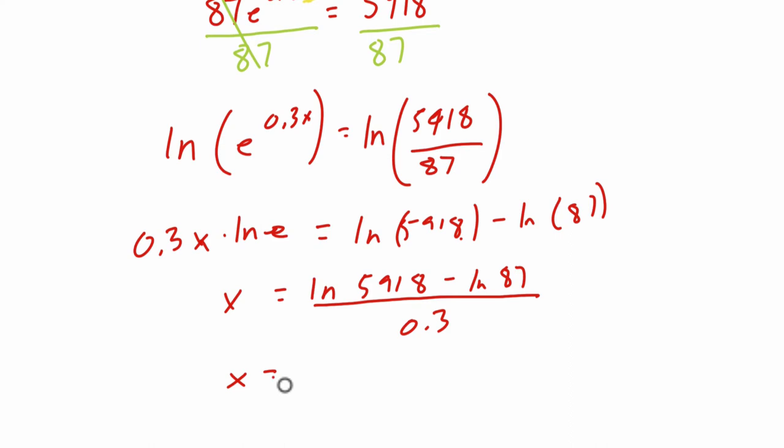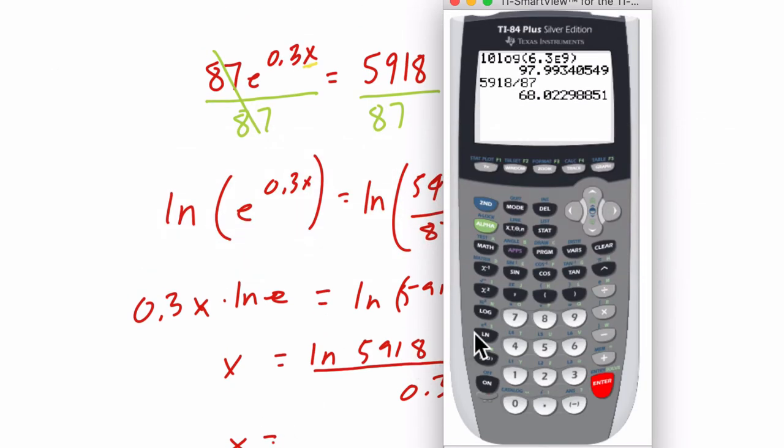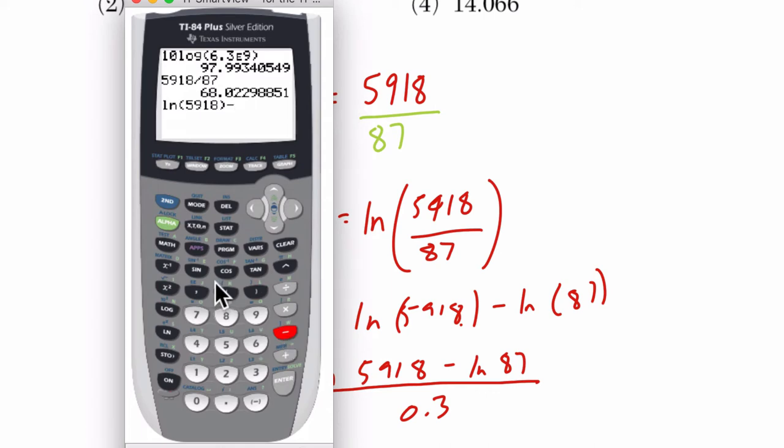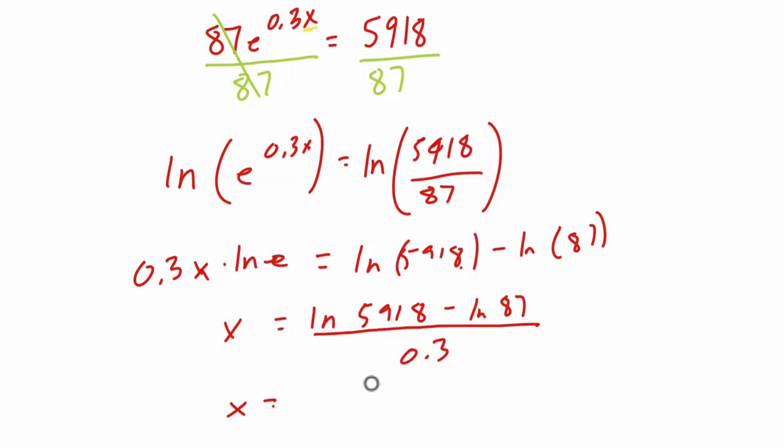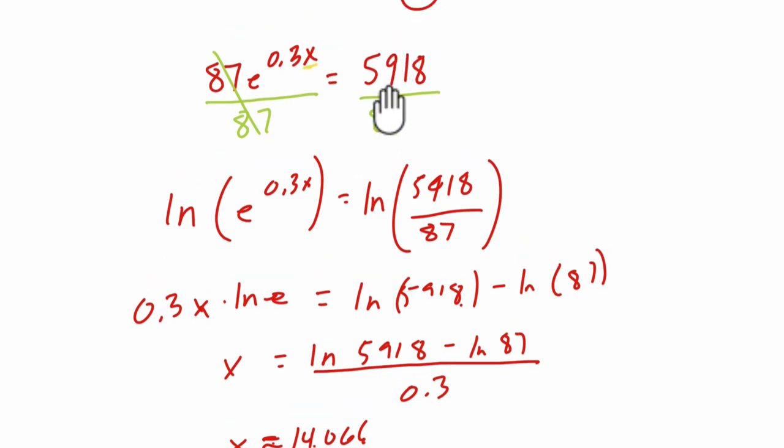So let's just pull up the calculator and do that. We have the natural log of 5918, close those parentheses, and then subtract the natural log of 87. First enter gives some result, and then divide that by 0.3, and you get 14.066. That tells me that x is about 14.066, which is choice 4 in our original problem.